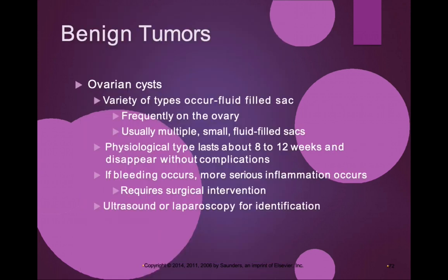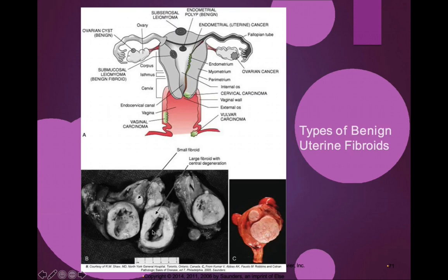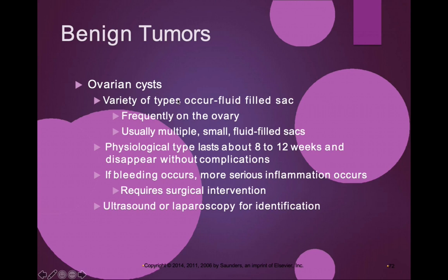Ovarian cysts are fluid-filled sacs that frequently occur on the ovary. Usually there are multiple small fluid-filled sacs. They typically last somewhere between eight to twelve weeks and then disappear without any complications. If bleeding occurs or more serious inflammation develops, surgical intervention may be required. Ultrasound or laparoscopy are the techniques used to identify these ovarian cysts.